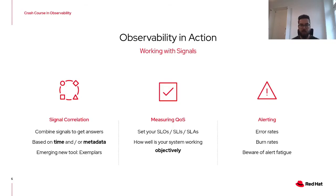You can also use signals — particularly metrics — to measure the quality of your service. Set your goals in SLOs, for example, and track them with the help of metrics. This allows you to objectively measure how well your system is doing and how satisfied your users are. Because it is not humanly possible to follow every output, automated alerting can help with notifying us about truly important events, such as reaching certain error rates or depleting error budgets too fast.